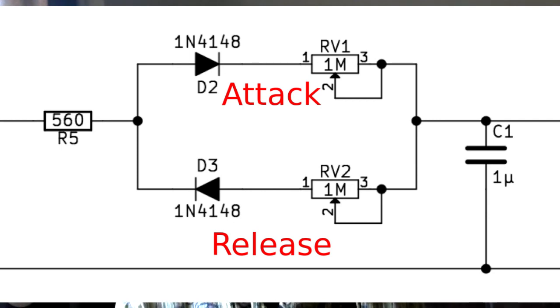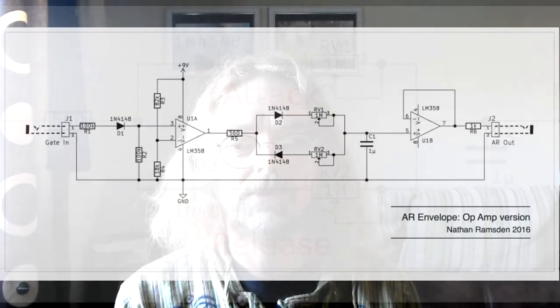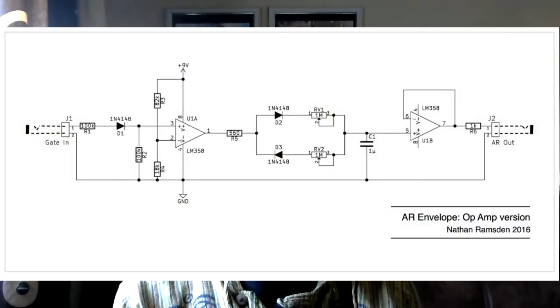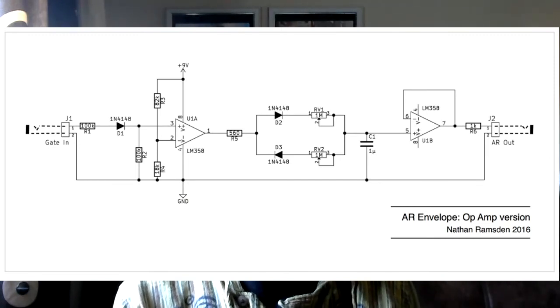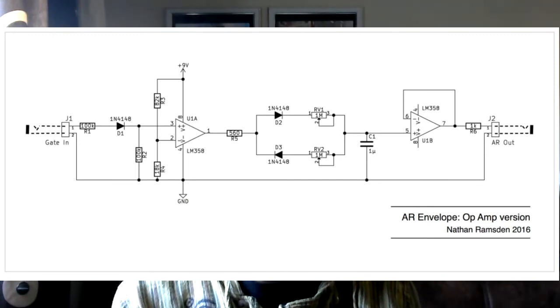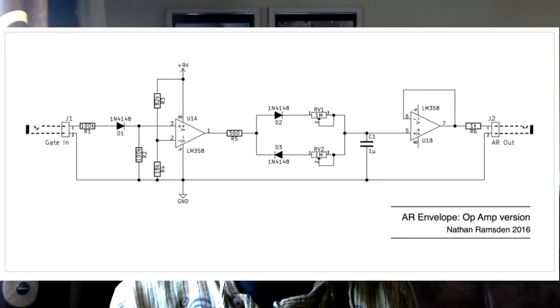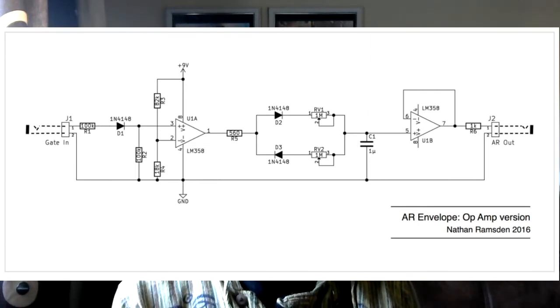So then you plug the whole circuit together and you have a nice conditioned gate input which is then used to trigger the charge and discharge on our RC circuit, which is essentially a bit of a filtered circuit.